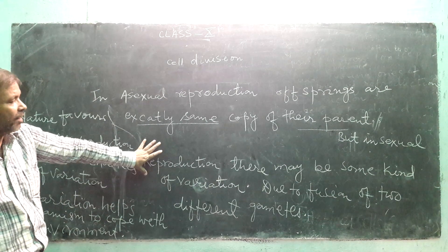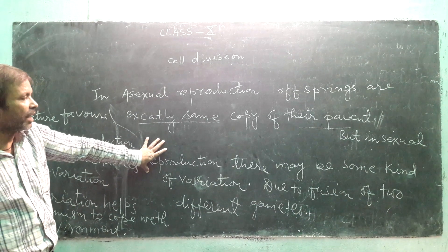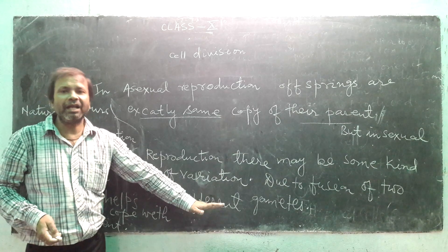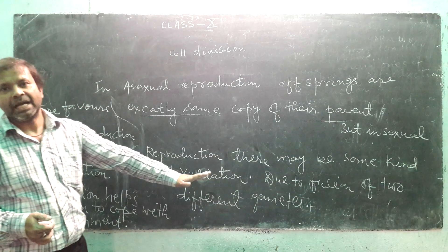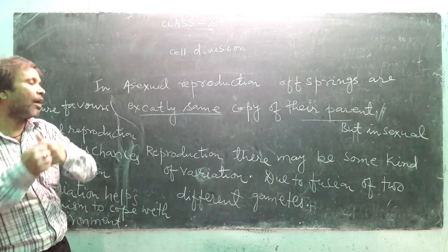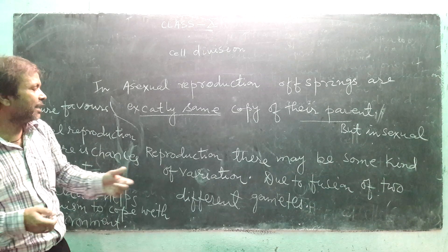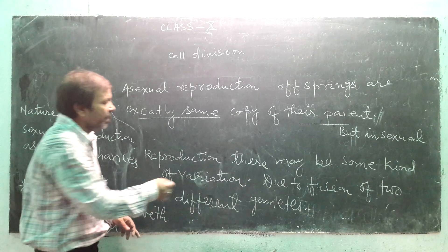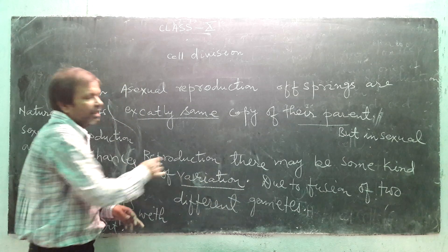In sexual reproduction, we are not exactly like our parents. The offspring are different from the parents because characters from both parents combine. So students and teachers can look different from their own parents.